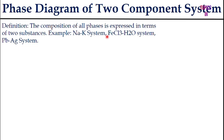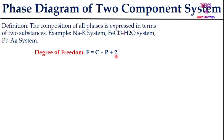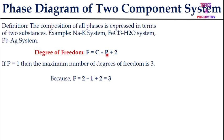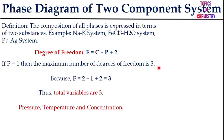You know the phase rule: degrees of freedom F = C − P + 2, where C is the number of components and P is the number of phases. For a two-component system, C = 2. The minimum number of phases is 1, so if P = 1, then F = 3. Thus the maximum degrees of freedom is 3, meaning the two-component system has three variables.